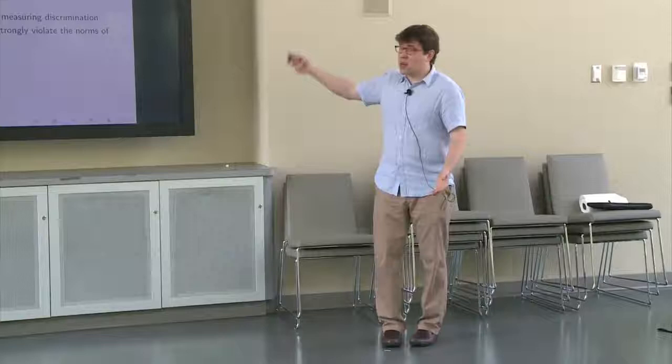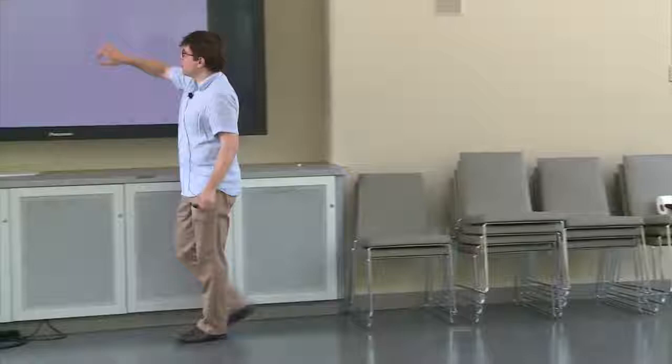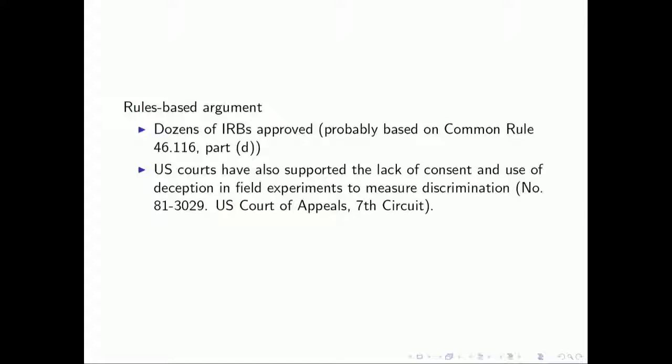So notice, this is a well thought out argument. This is not like, oh, I didn't feel like getting consent from these people. This is actually quite well thought out. There's also a rules-based argument that you could use. So dozens of IRBs have approved this, most likely based on this particular part of the common rule, which has specific conditions under which consent can be waived. There's also a legal basis for this. So U.S. courts have supported the lack of consent and use of deception in field experiments to measure discrimination. This was a measure, I think, of housing discrimination, field experiment to measure housing discrimination. And this court made many of the similar arguments that the researchers made here.